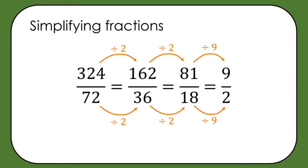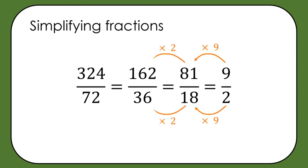Dividing both numerator and denominator by the same thing allows us to create what we call equivalent fractions — different fractions that all have the same numerical value. We're also allowed to multiply numerator and denominator by the same thing, and again that creates equivalent fractions. Really, that's all we're allowed to do to a fraction whilst not changing its value: multiply the numerator and denominator by the same thing, or divide them by the same thing.